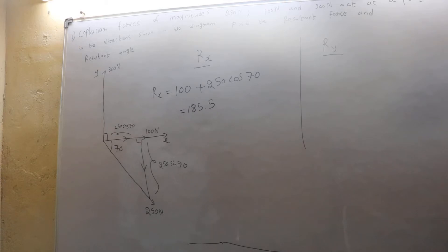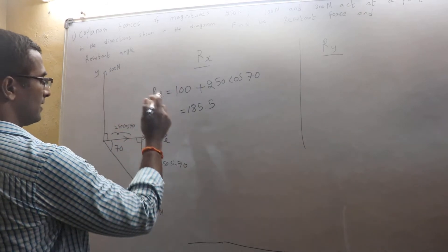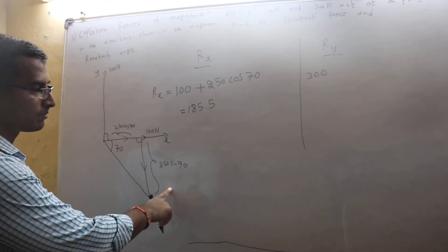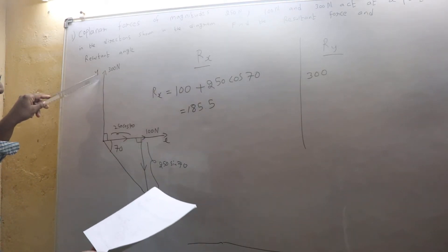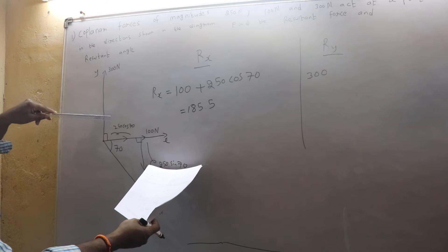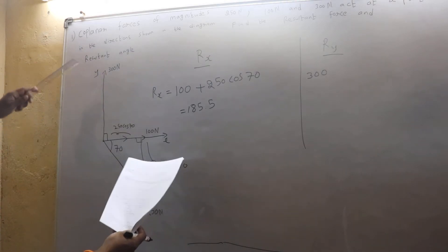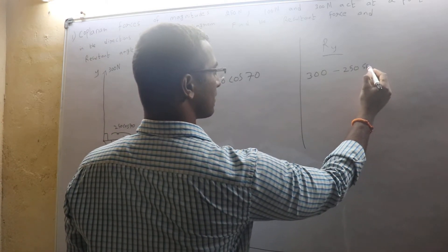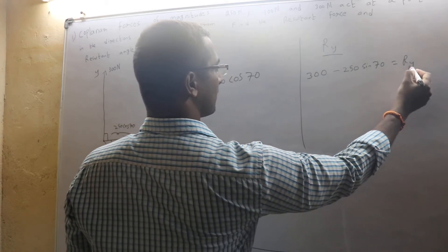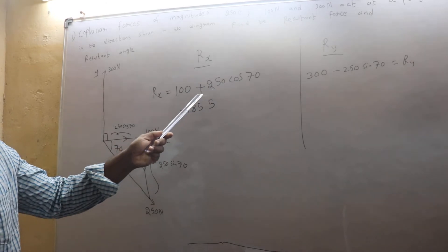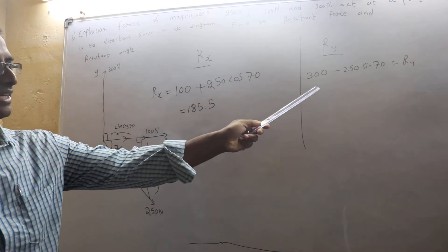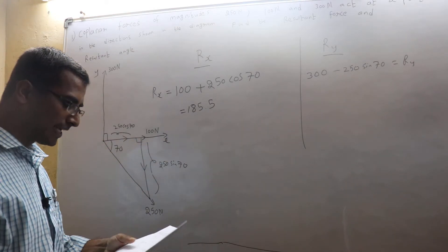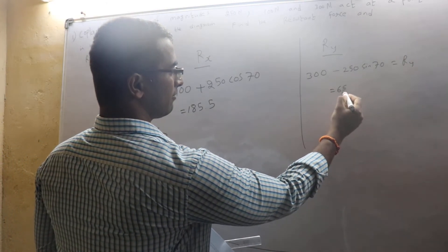Now Ry means what all are acting vertically. 300 is acting vertically up. The other one is 250 sin 70. But you should be aware that 300 and 250 sin 70 both are in opposite directions. So between these two, I need to place a negative sign. 250 sin 70, which is my Ry. Over here, these two are in the same direction, so plus. Over here, these two are in opposite directions, so minus. So if you calculate, I get Ry to be 65.1.